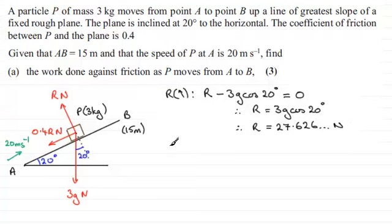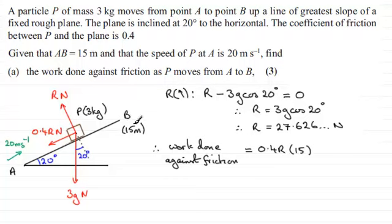So we're now in a position to therefore get the work done against friction. Work done against friction. Just put that intro in there. And the work done then against friction, force times distance, is going to obviously then be 0.4 times R times the distance moved, which is 15 metres.